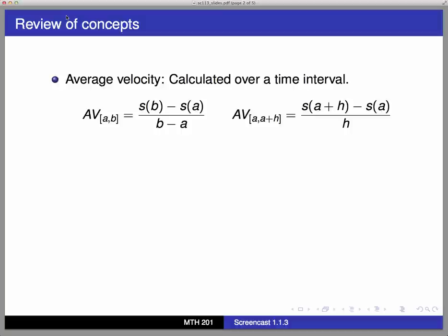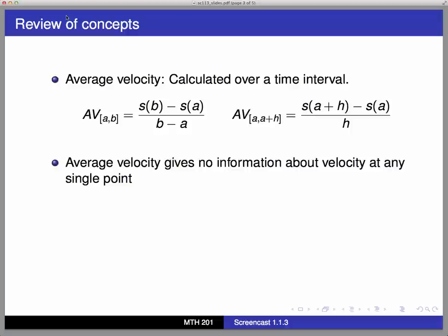First, remember that the average velocity of a moving object can only be calculated over a time interval, and we need two time values to compute it. Here are the two formulas we've seen that compute average velocity. Namely, we need a start time and either a stop time or a time length to calculate average velocity. Also recall that an object's average velocity does not give us any information about how fast the object is moving at a single point in time. It only gives us a general central value of its velocity.